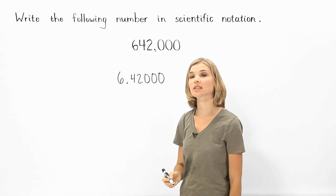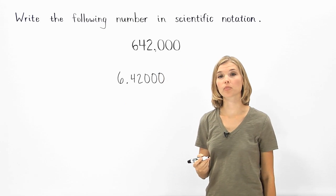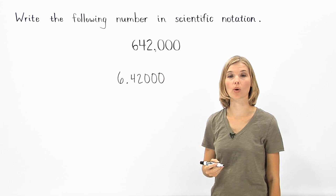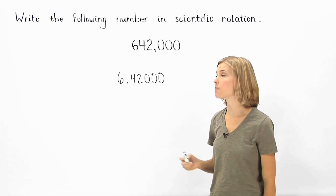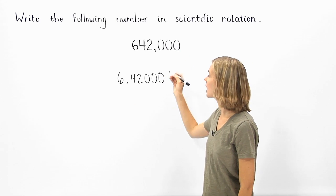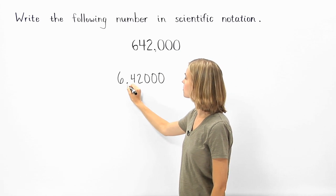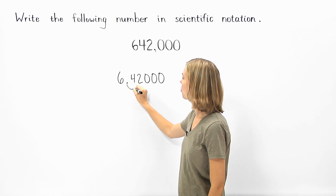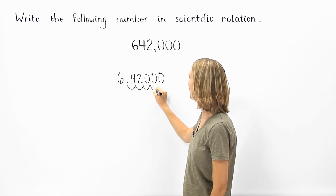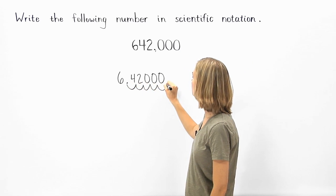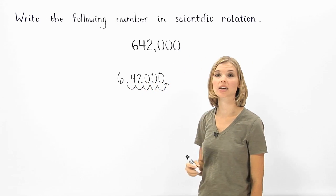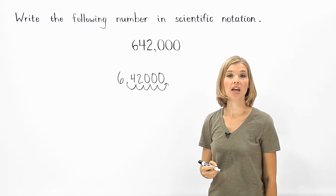Next, count the number of places that we would need to move the decimal point in order to get back to the original number. We would need to move the decimal point 1, 2, 3, 4, 5 places to the right to get back to the original number.